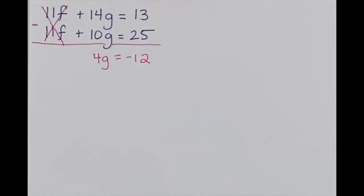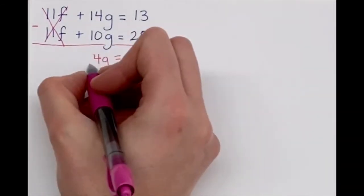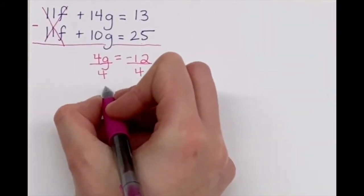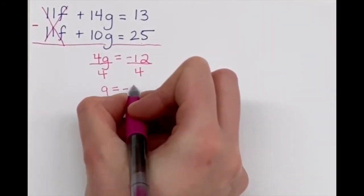And then once again, we have a simple one-step equation. Divide both sides by 4. And we have g equals negative 3.